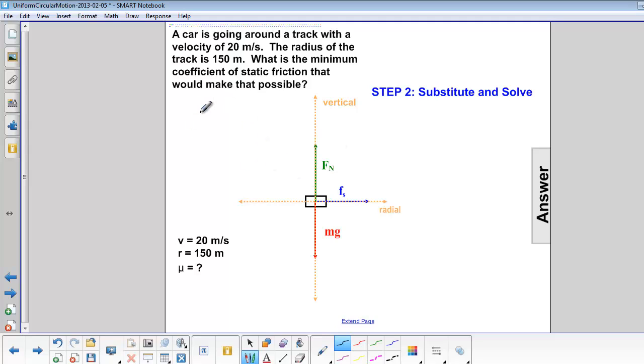We can see from our free body diagram that the normal force is equal to mg. And since force of friction is equal to μ times normal force, in this case, it is equal to μmg.